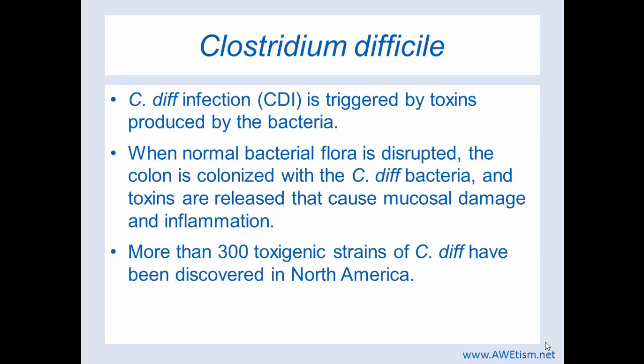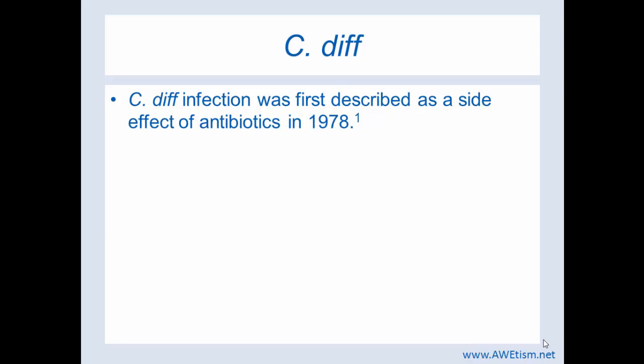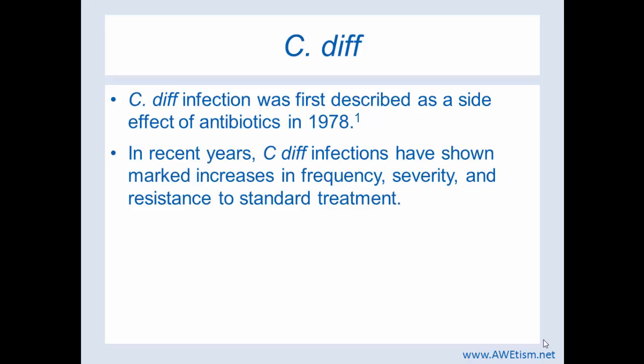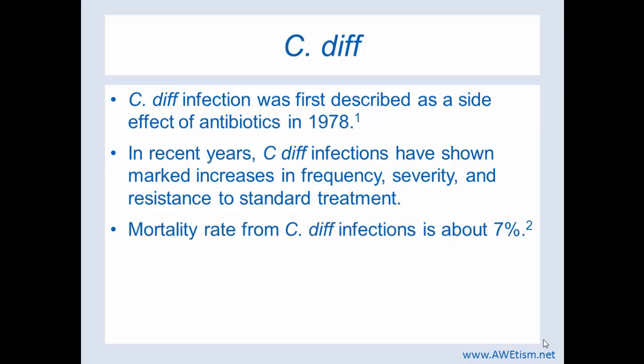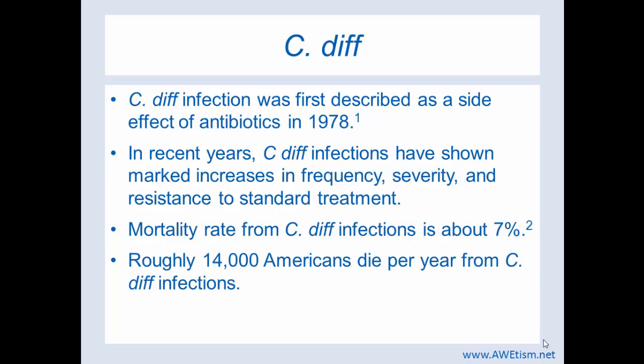There are more than 300 toxigenic strains of C. diff that have been discovered in North America. C. diff infection was first described as a side effect of antibiotics in 1978. In recent years, C. diff infections have shown marked increases in frequency, severity, and resistance to standard treatment. The mortality rate from C. diff infections is about 7%, and roughly 14,000 Americans die per year from C. diff infections.